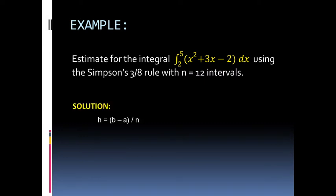As a solution, we need to calculate h, that is b minus a all over n. Getting h, we will have 5 minus 2 all over 12, and that is 0.25.